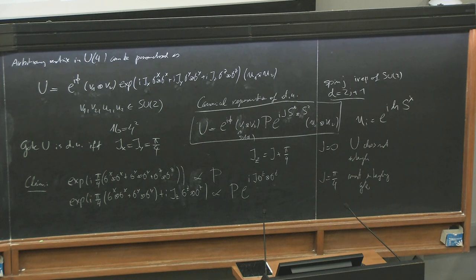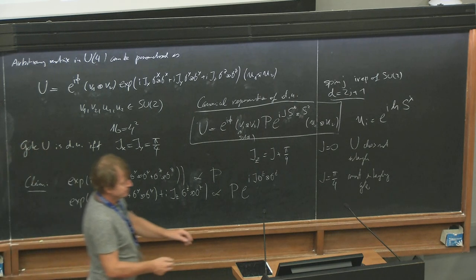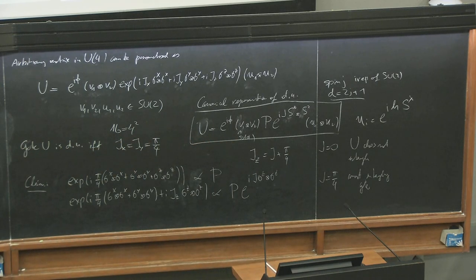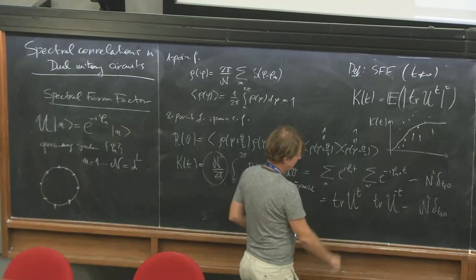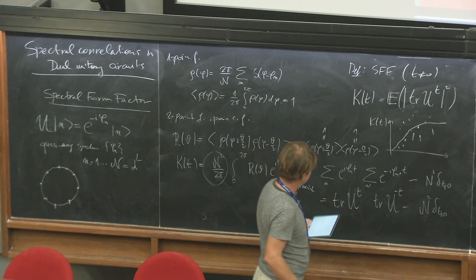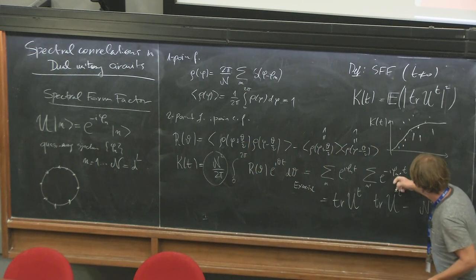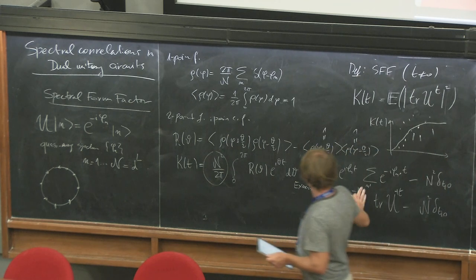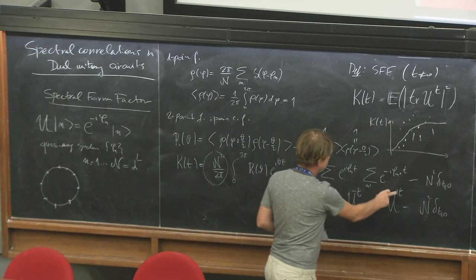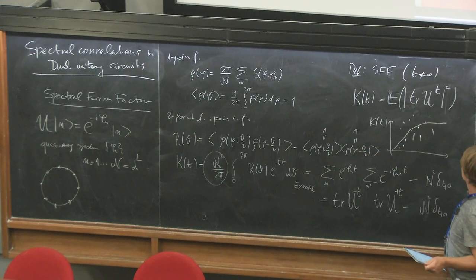Now let's go back to our discussion of spectral correlations. Once we define the spectral form factor, let's discuss its essential scales. The normalization factor is chosen so that we get no normalization here. Sometimes people define it differently, but for us the spectral form factor is the modulus squared of the trace of U^t.